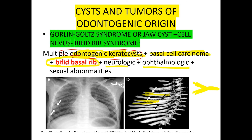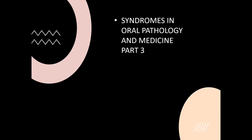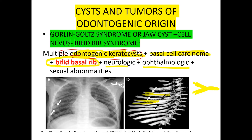Gorlin-Goltz syndrome also features neurological, ophthalmological, and sexual abnormalities. That covers this session on syndromes in oral pathology and oral medicine. In another session we will discuss more syndromes. I hope you liked the class — please give a like, share, and subscribe to our channel. See you in the next class, thank you very much.